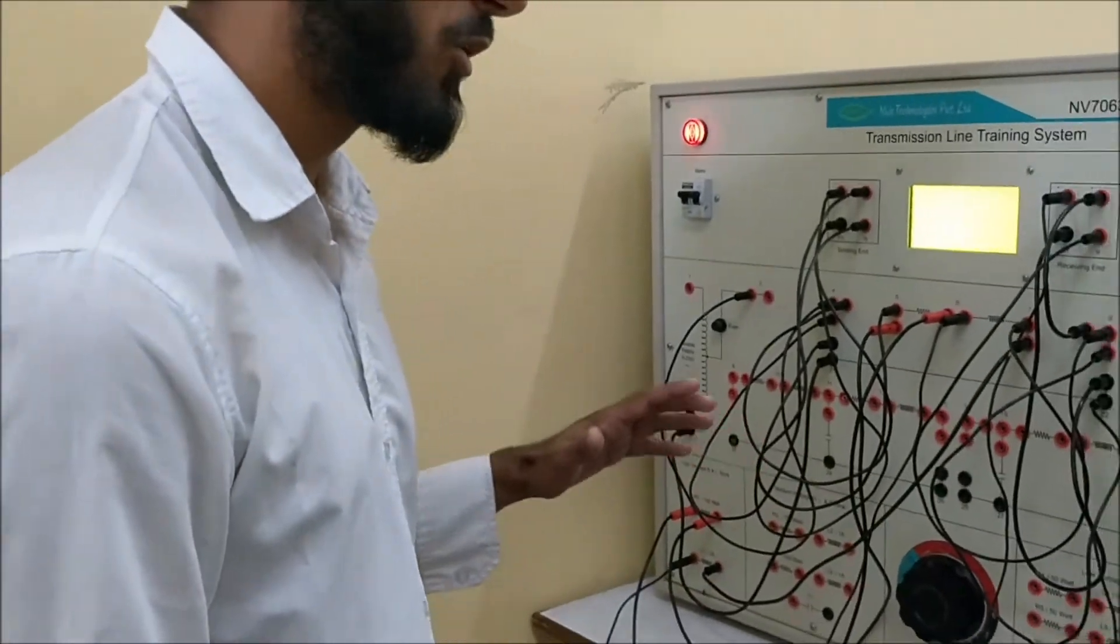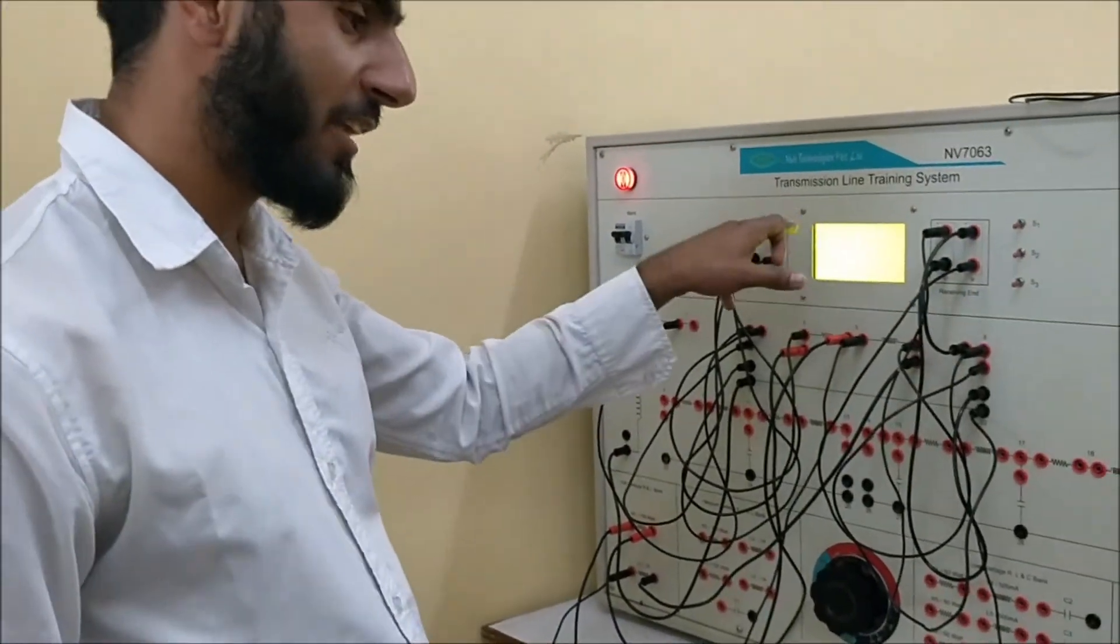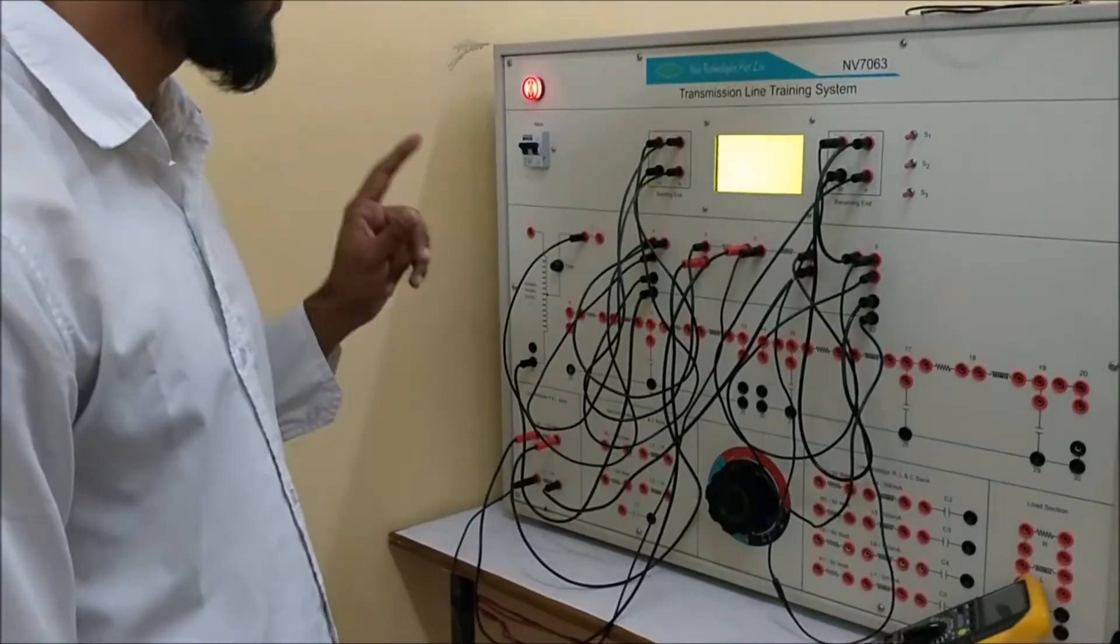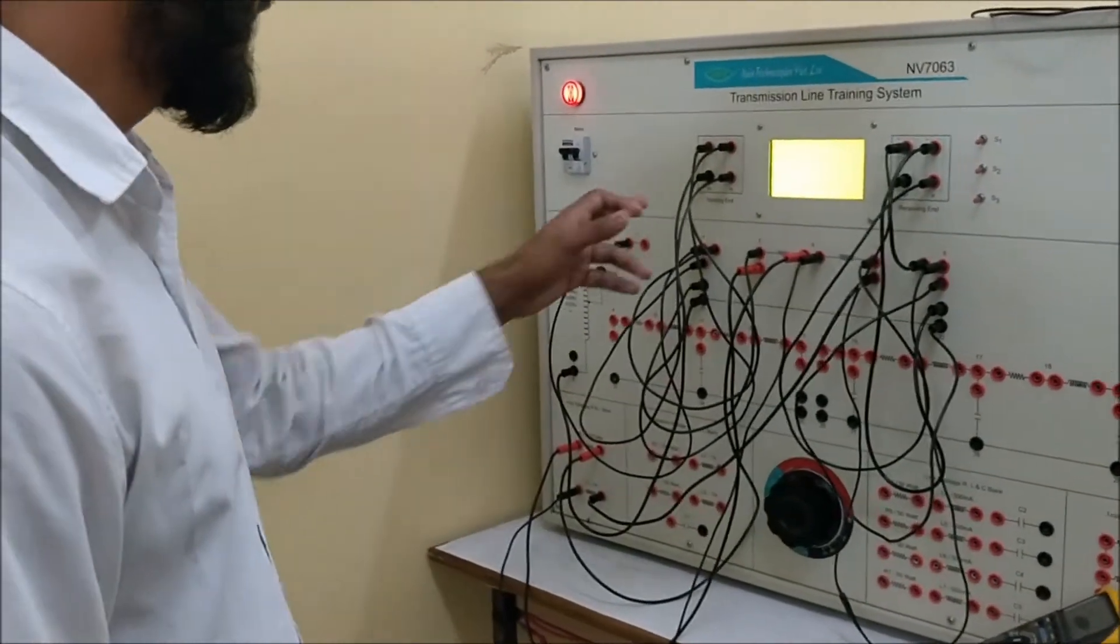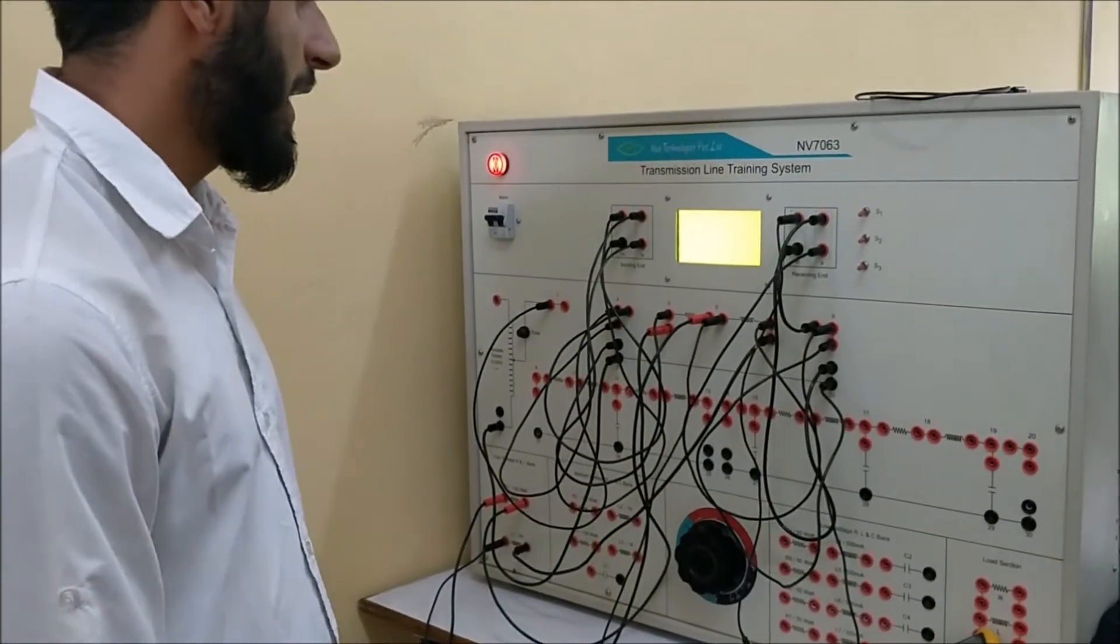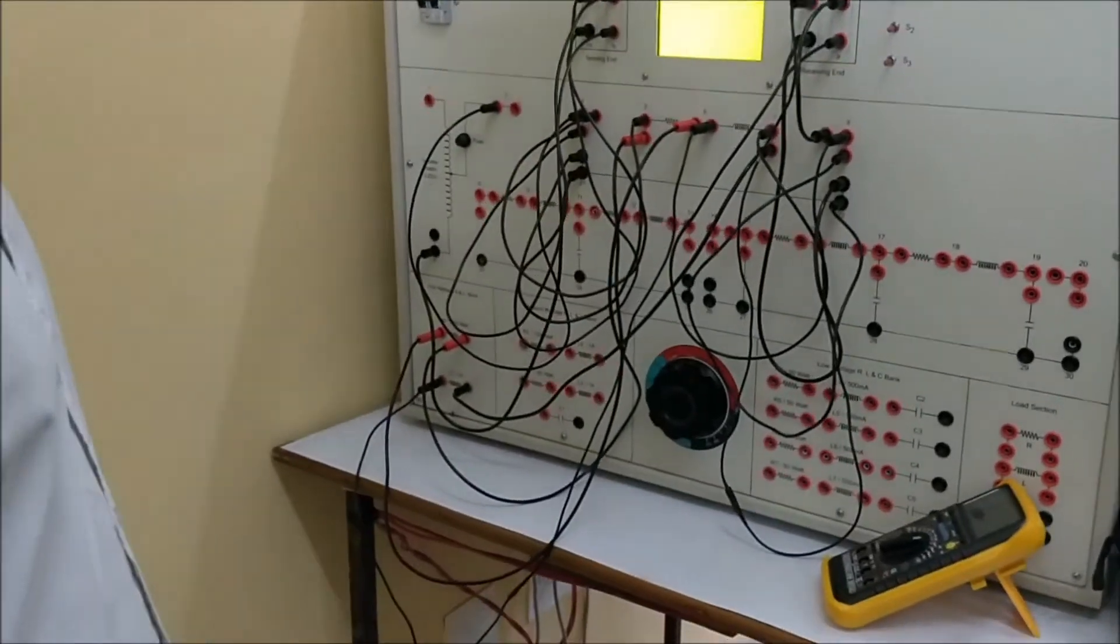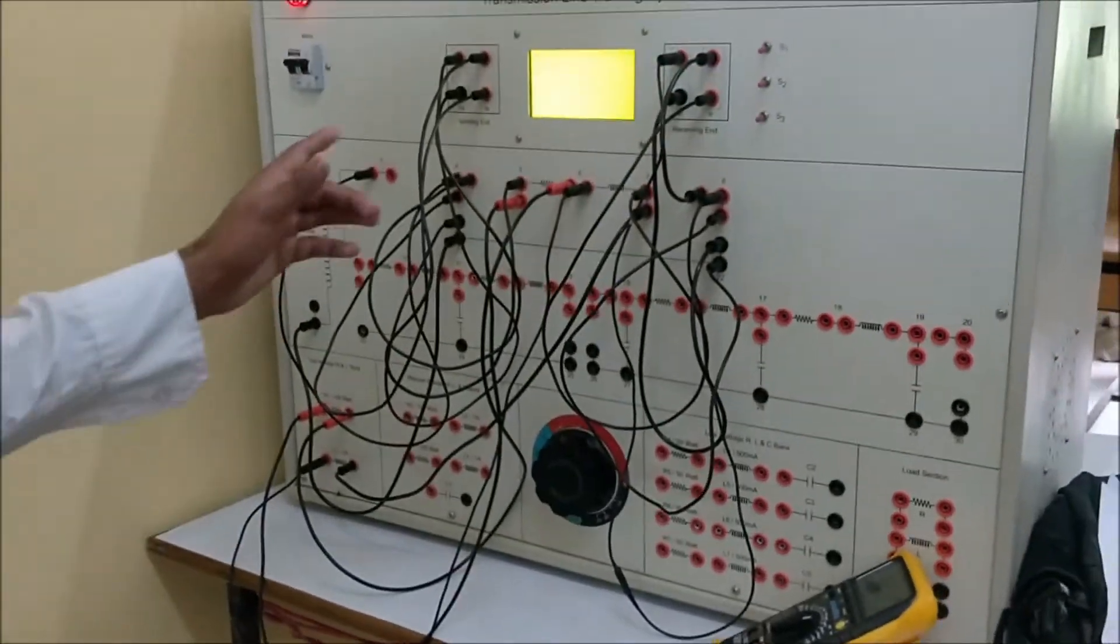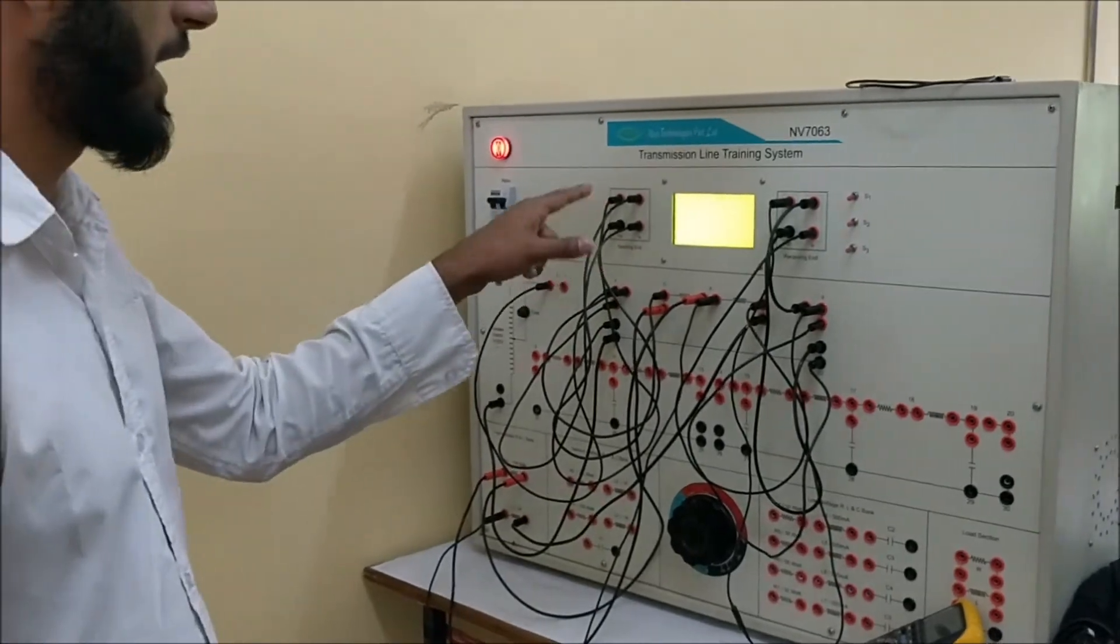From short circuit we obtain the values of B and D. From the display it is clear that Vs equals 100 volt and Vr equals 1.50. And D equals Is by Ir, and Is equals 1.50 and Ir equals 1.60. So we have obtained all the parameters from the open circuit and short circuit of the transmission line.